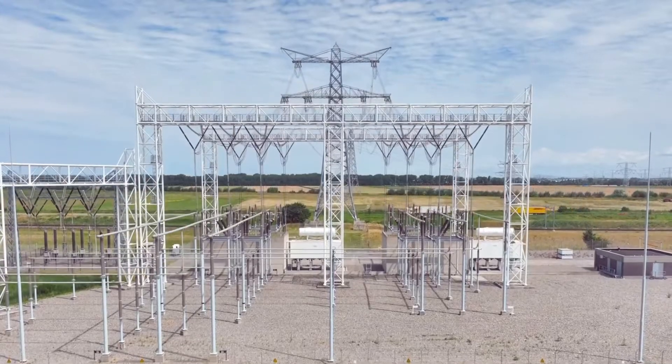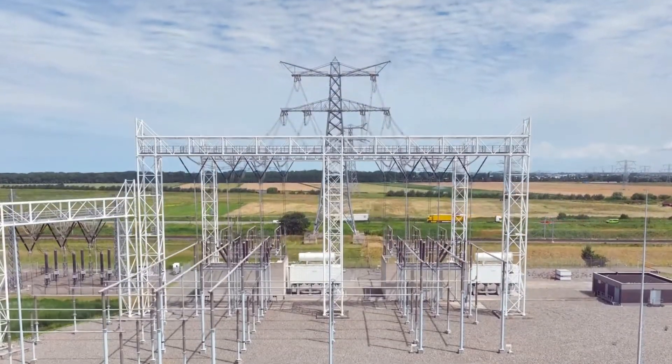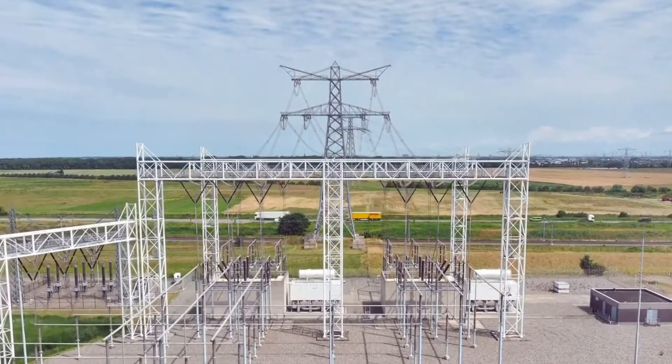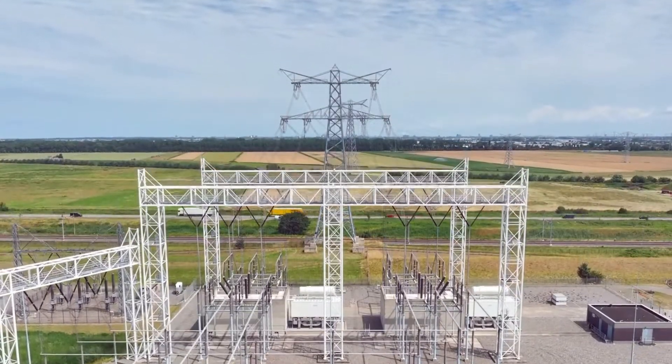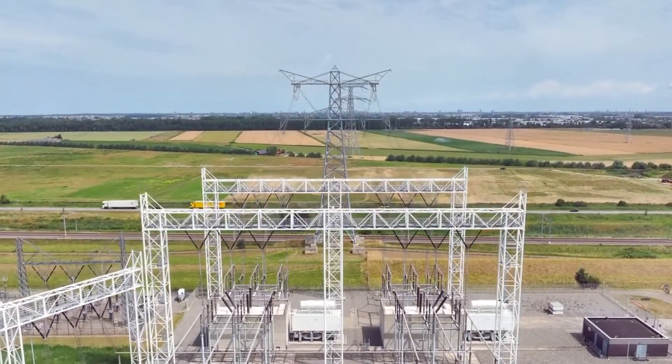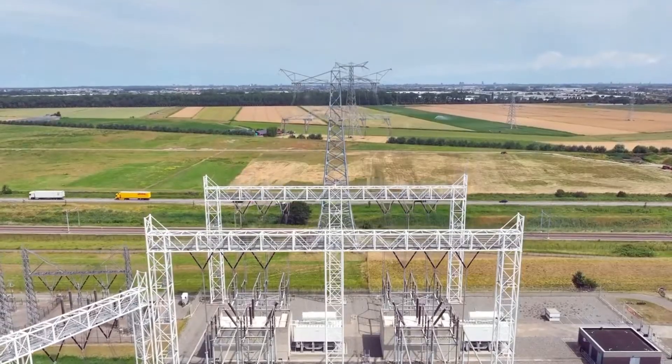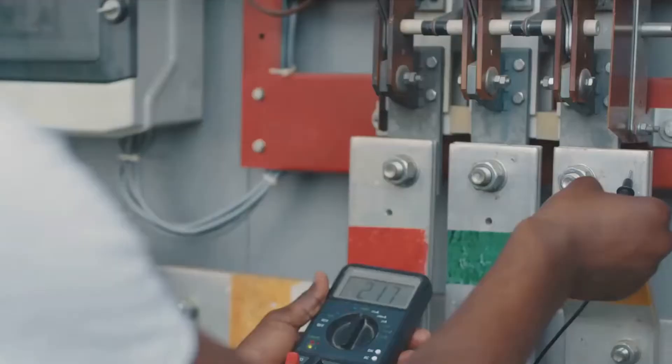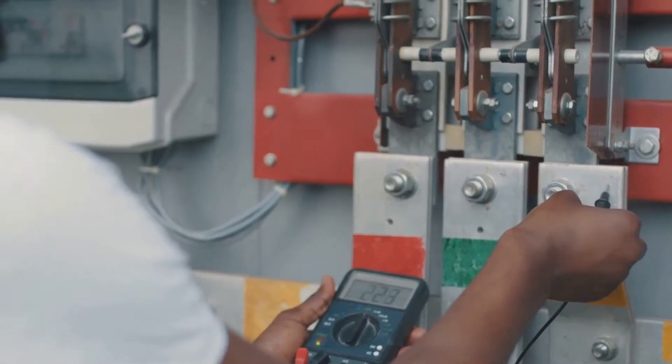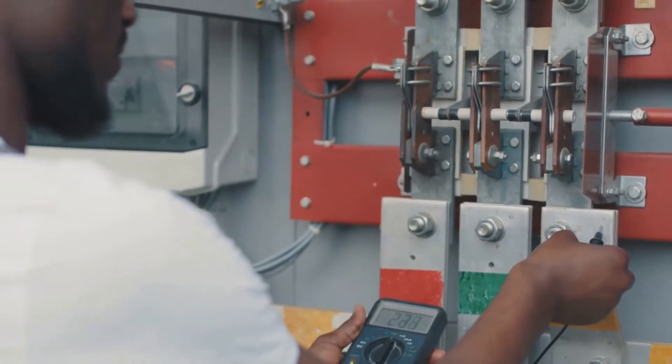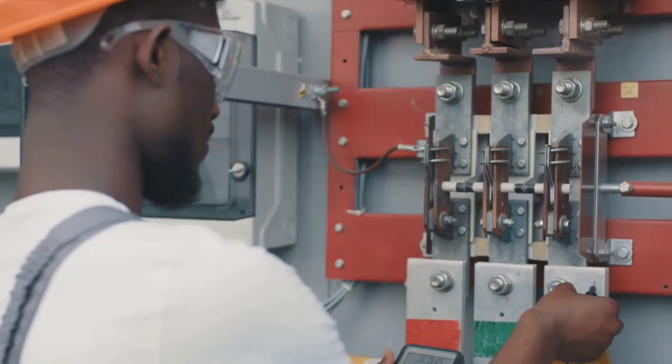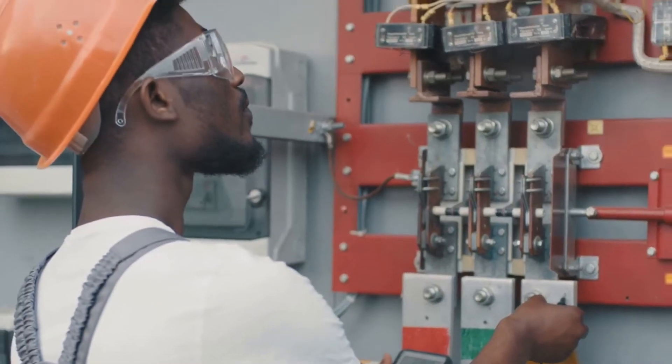It's this dynamic interplay between capacitive and inductive reactive power that keeps our power systems stable. Picture it as a tug of war. Too much of one type can cause voltage instability, so it's crucial to maintain a balance. When perfectly synchronized, it ensures our power systems operate efficiently and reliably.